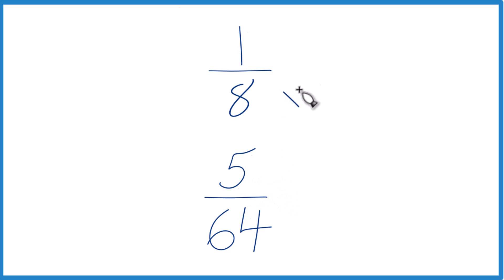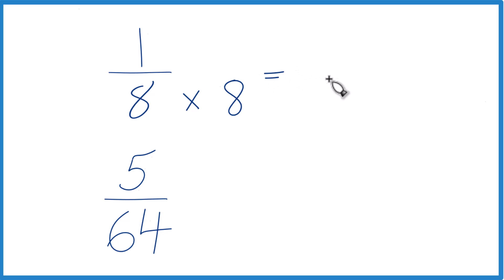Let's multiply eight times eight, because eight times eight equals 64. And down here, we already have 64, so let's just keep this the same.